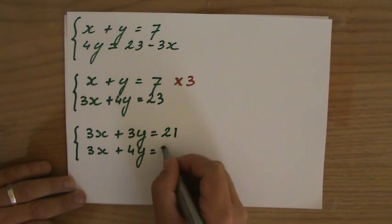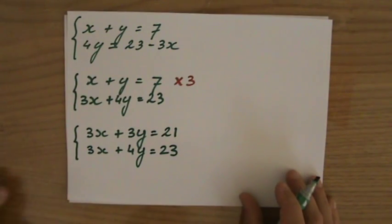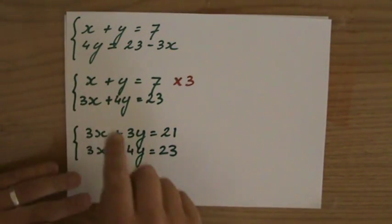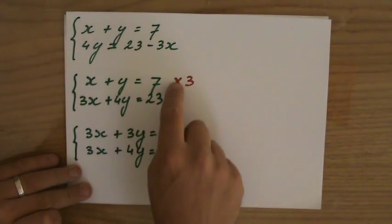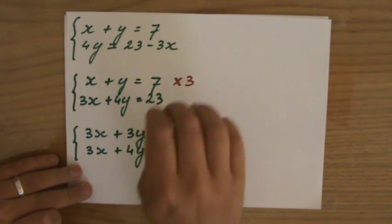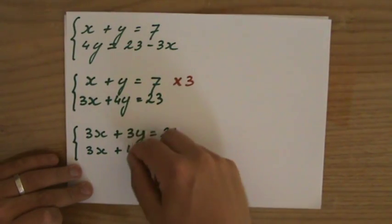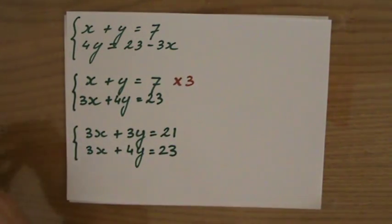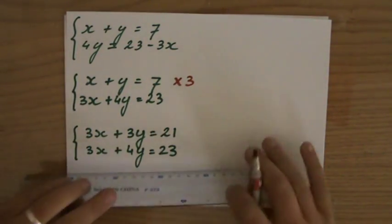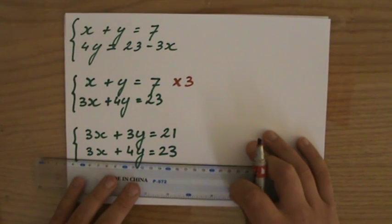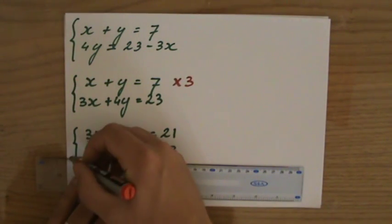Now I could also have multiplied this equation by four, and which variable would I then eliminate? That would have been the y. But in this case, as you can see, I'm going to eliminate the x.